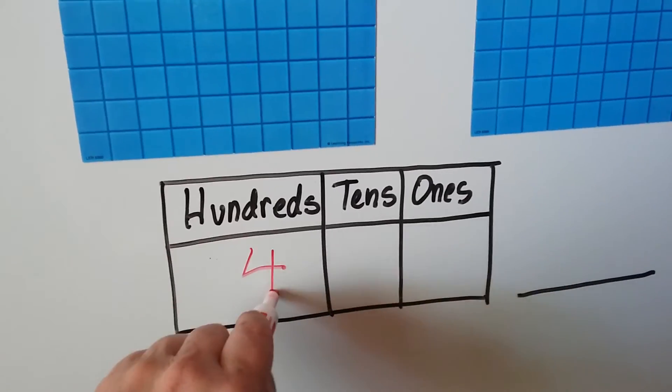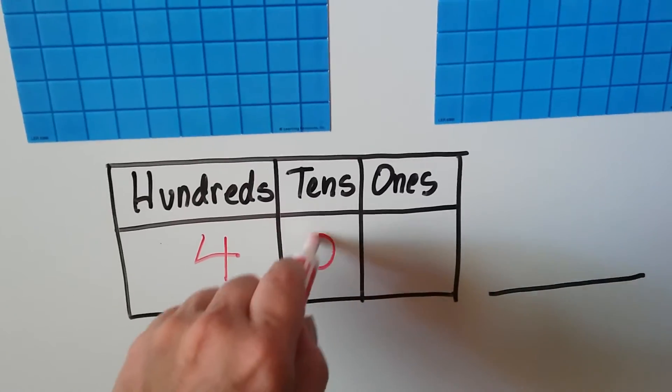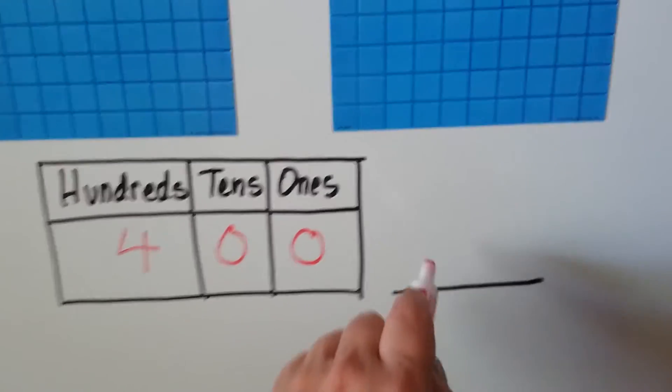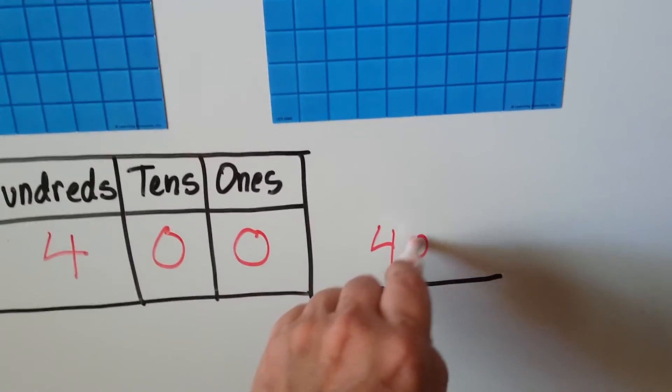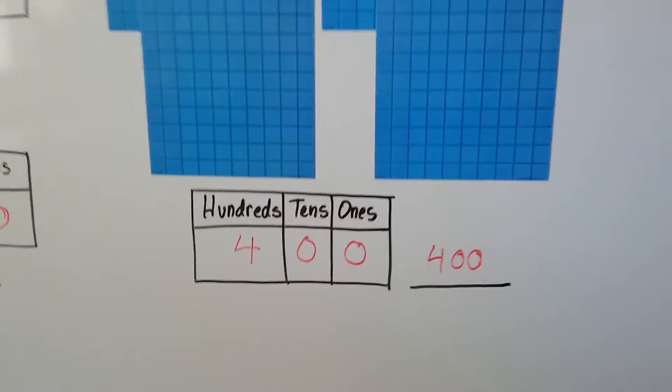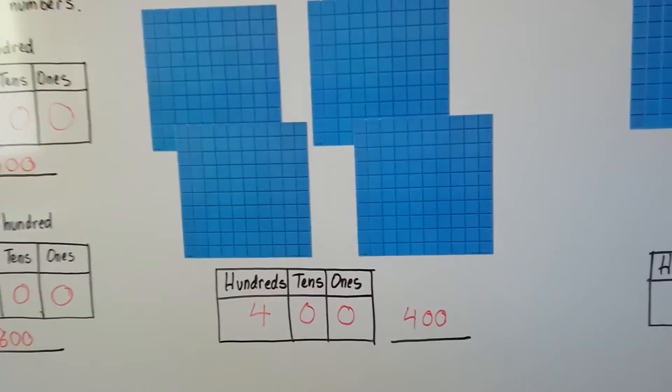We write a 4 in the hundreds place. There's 0 tens and 0 ones. And to write it as a number, it's 4, 0, 0. See? 4 hundreds. 1, 2, 3, 4.